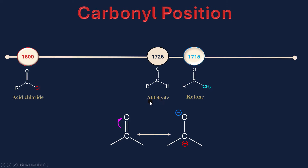You can consider the aldehyde as your base value, as it's not influenced by any factors. By comparing it with ketone, you will find that ketone has a lower wavenumber. Because of the inductive effect — the electron-donating effect of the alkyl group — which increases the electron density on the carbon atom, so it has another source for electrons other than oxygen. So the double bond character decreases and the wavenumber decreases.